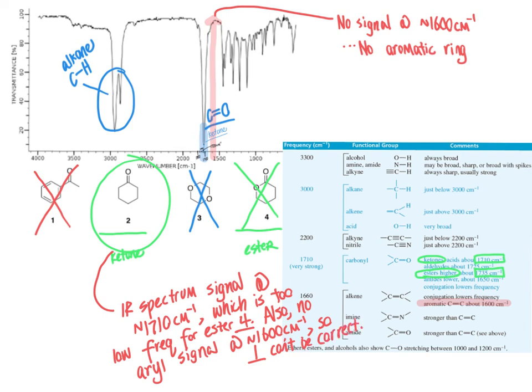And so there's equal parts process of elimination here as is interpreting the data that we see. So the data that we don't see in these spectra are as important as the data that we see. We were using signals that are not observed, such as the signal for aromatics that was not observed, as one way of ruling out compounds. And then we use signals that we do see as ways of supporting and narrowing down what compound is present in this problem. So ultimately, we determined the ketone is the best fit for the data that we have available here.